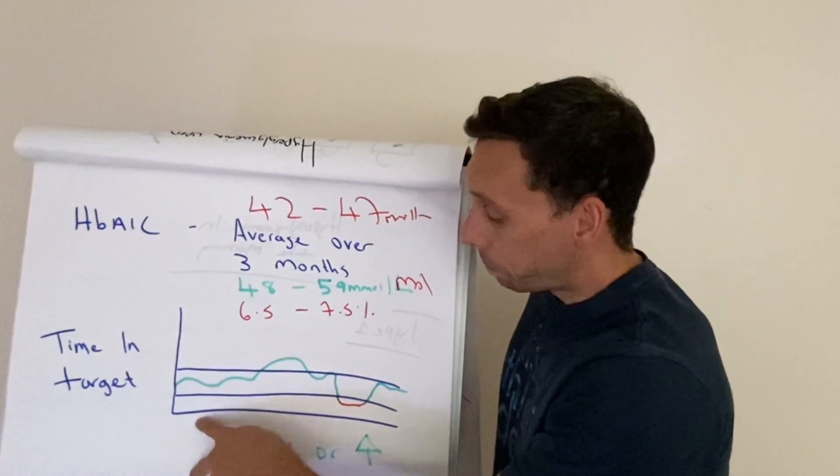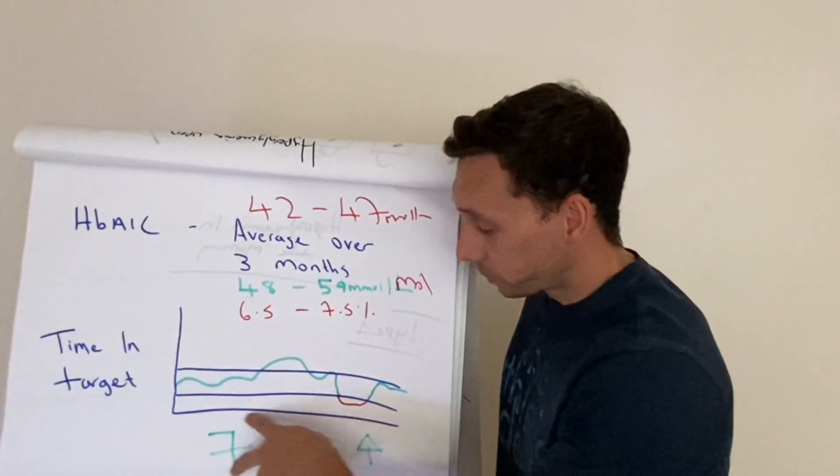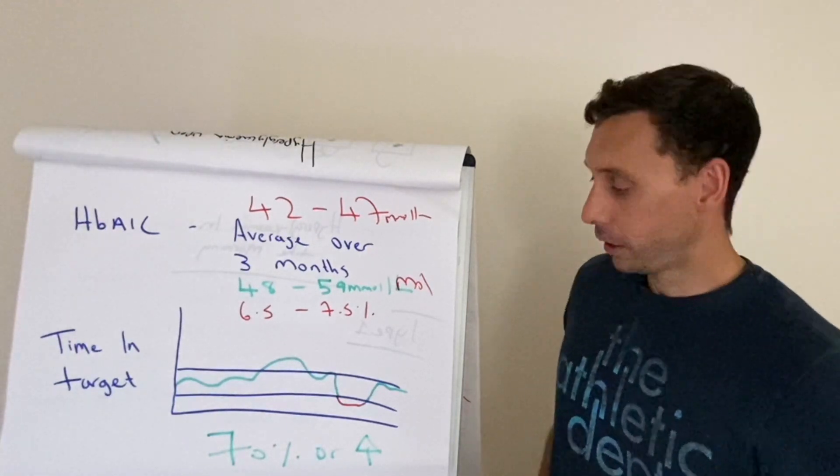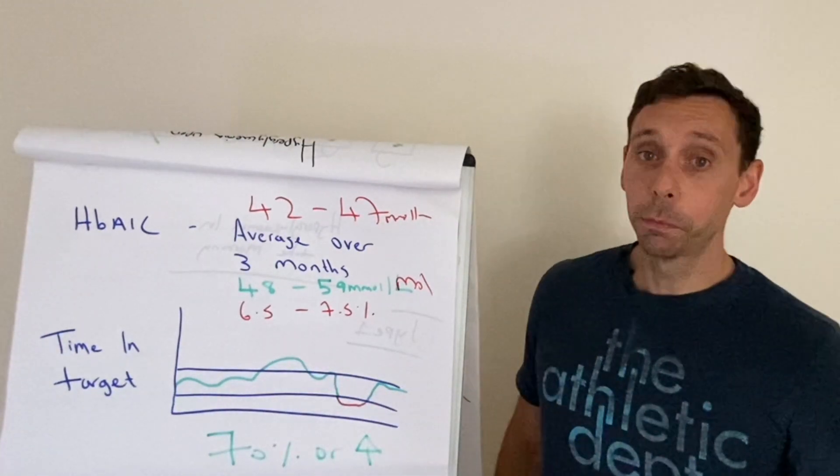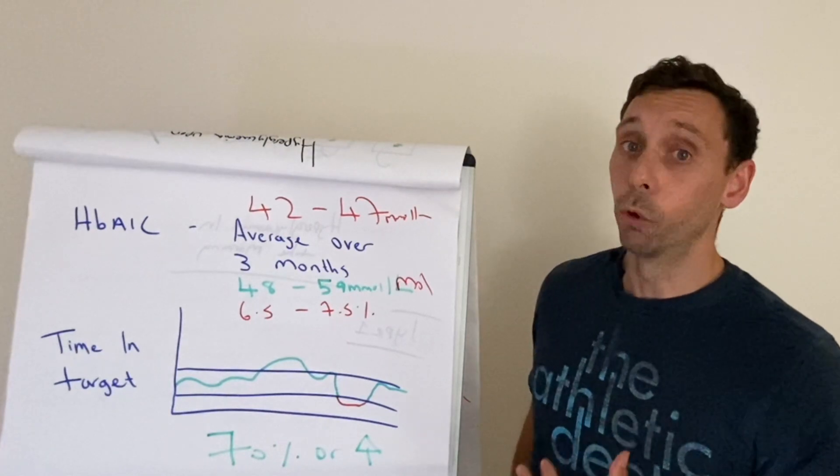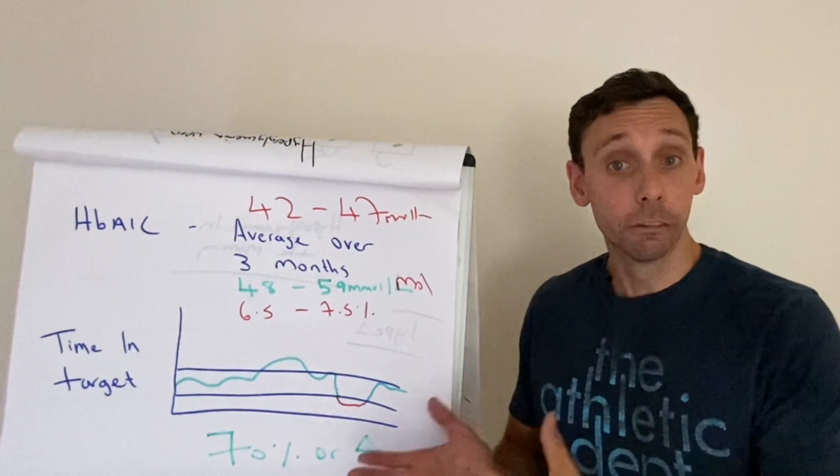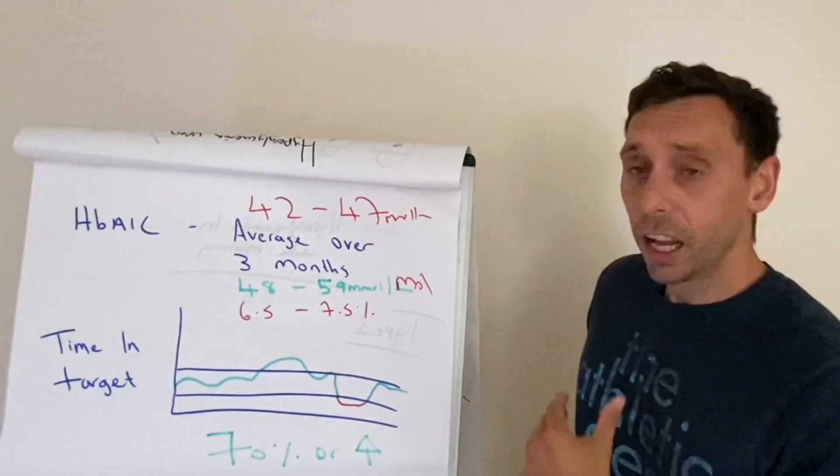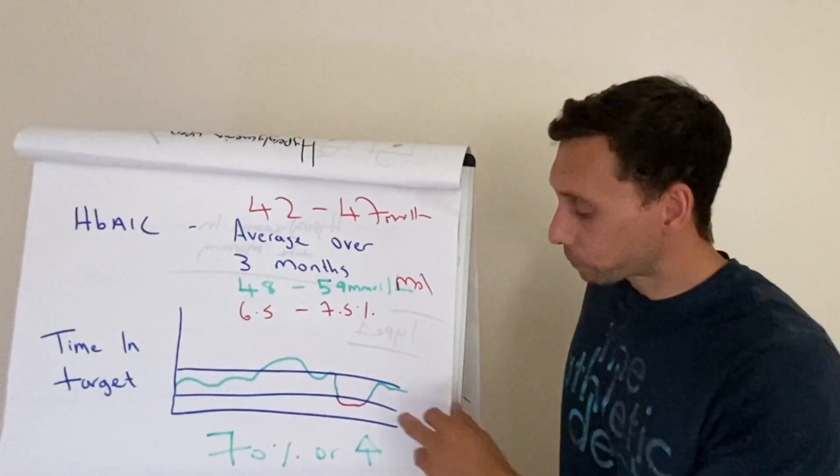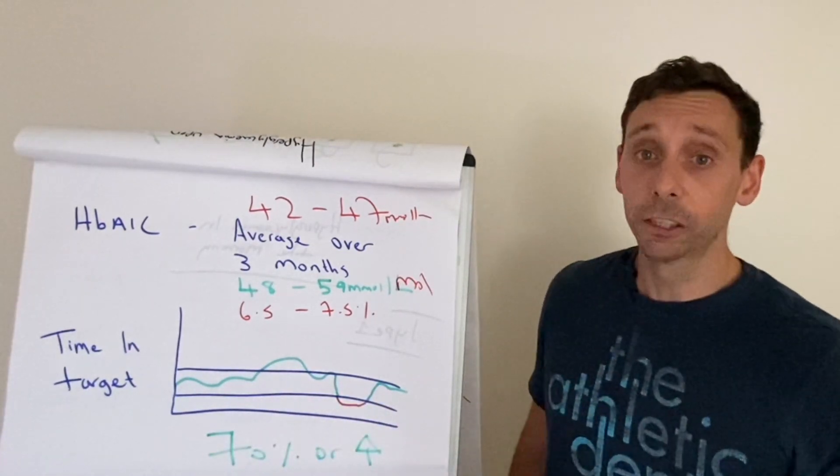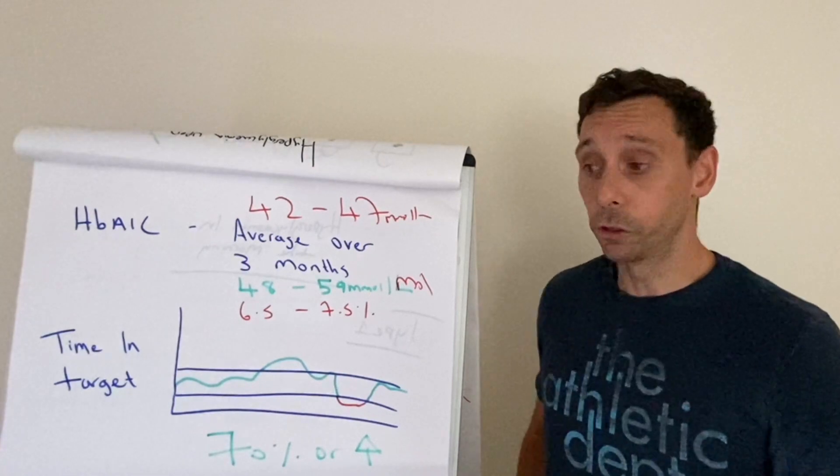So if you are in target range 70 or more percent of the time, you're doing pretty well. Some patients I see up in the 90s, but in order to do that, they're having to test an awful lot of times, which is nothing wrong with that, but it can become a bit all-consuming from what I've heard from some patients. Others tend to be a bit more laissez-faire and achieve around this 70% value. Some people are much below it, and that's for those patients that might have a bit more work to do.